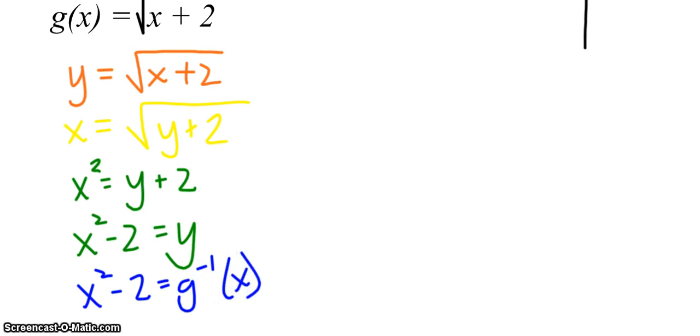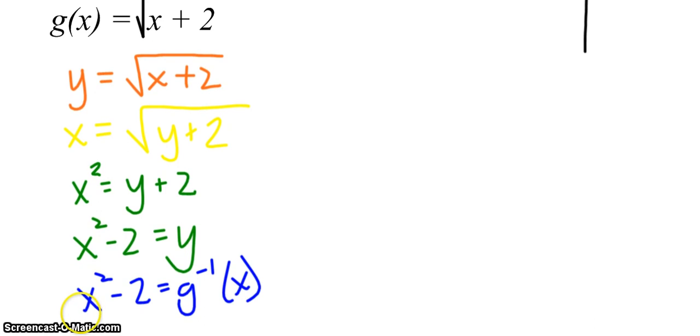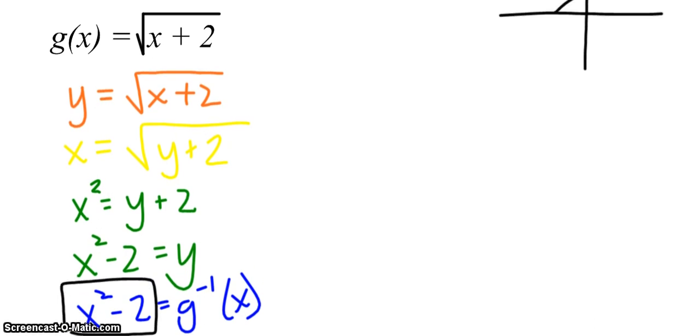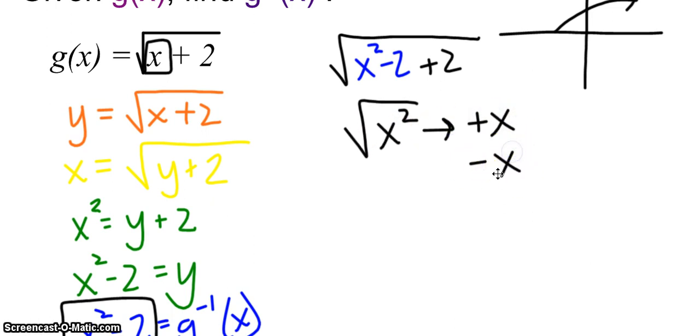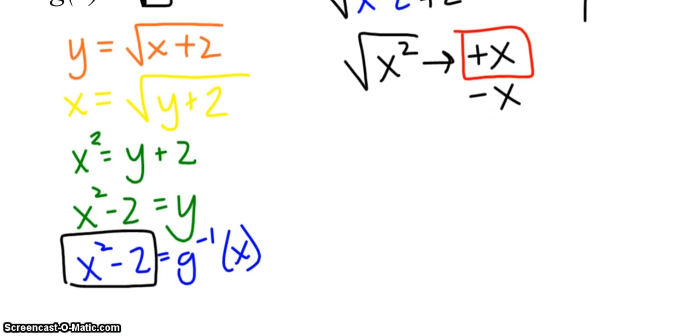Now, this time we are going to verify things. If I take x squared minus 2 and I plug it in for x up here, my answer ends up being the square root of x squared. Well, that could be positive x, or that could be negative x. We want it to be positive x. We can't be having both of these answers.